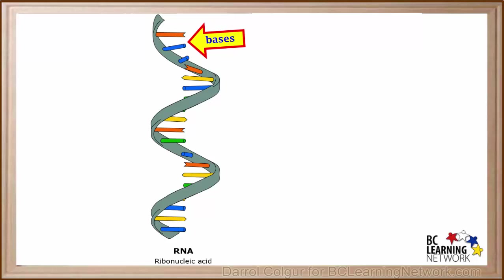Like DNA, RNA has nitrogenous bases shown as these colored bars. Three of RNA's bases are the same as those found in DNA.